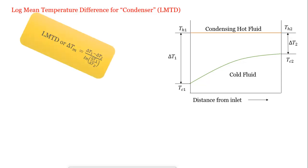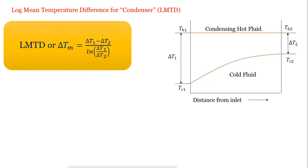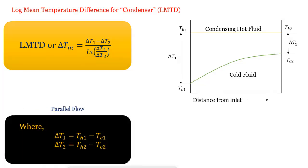We use the same formula for the log-mean temperature difference: LMTD equals delta T1 minus delta T2 divided by ln(delta T1/delta T2). If the condenser is in parallel flow, delta T1 equals TH1 minus TC1, and delta T2 equals TH2 minus TC2.